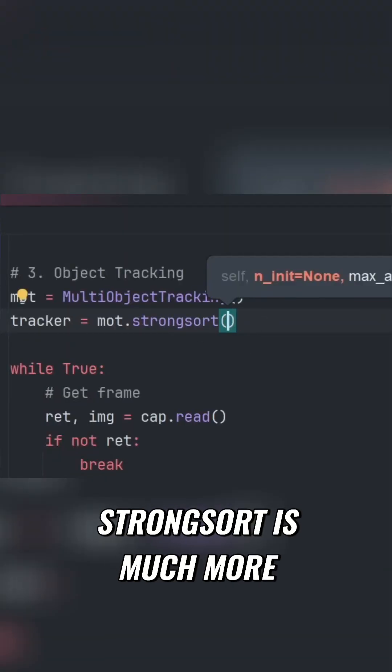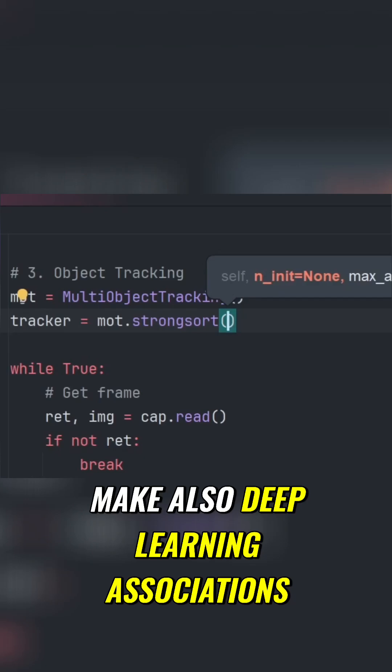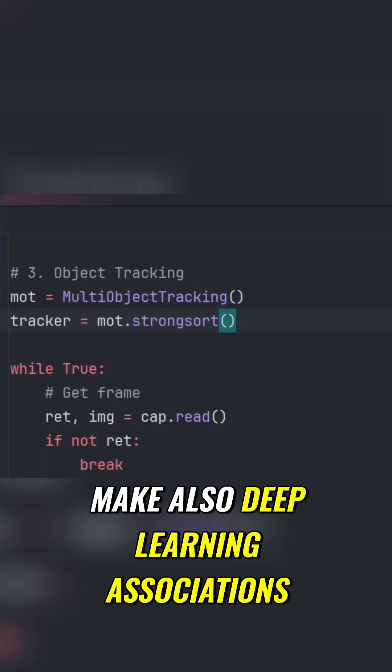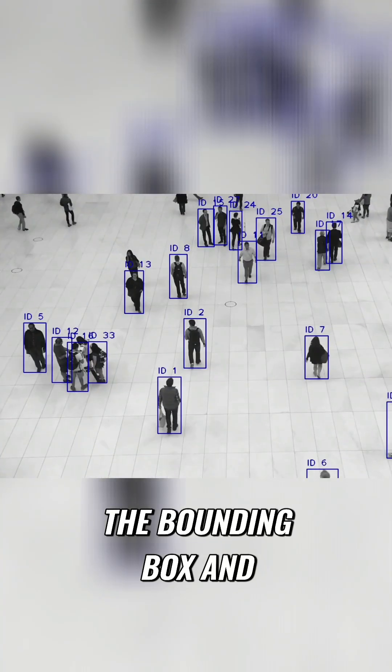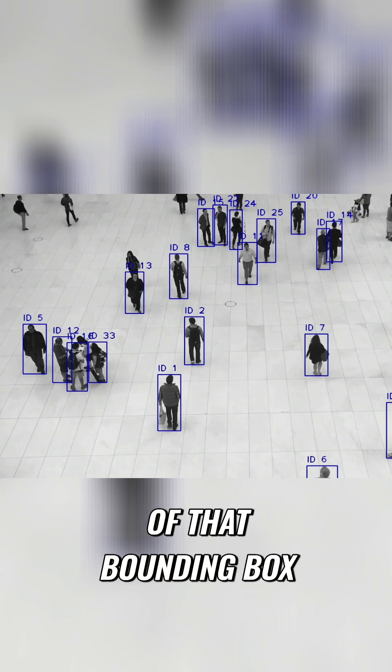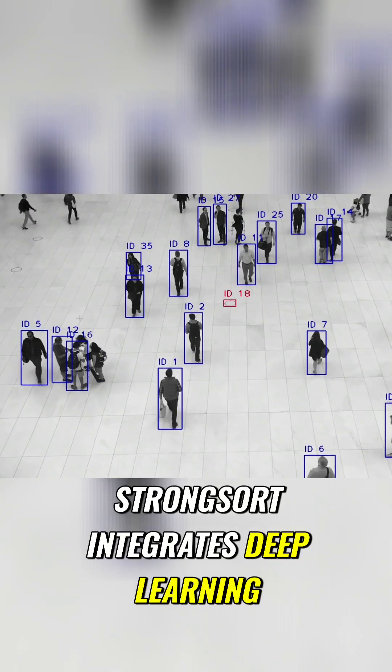StrongSort is much more advanced because it will make also deep learning associations. So not only will it check the possible object, but it will cut part of the image. It will cut the bounding box and make associations of that bounding box. StrongSort integrates deep learning.